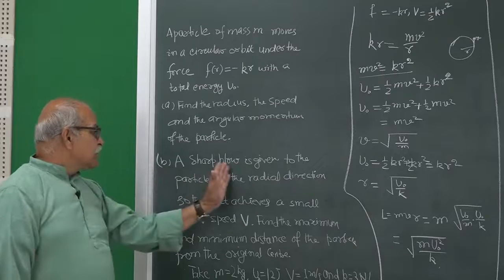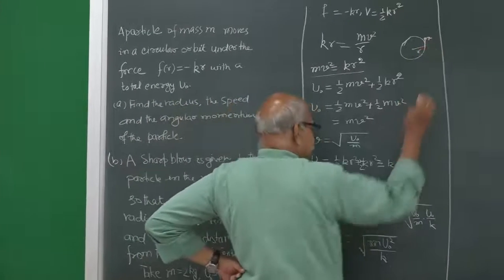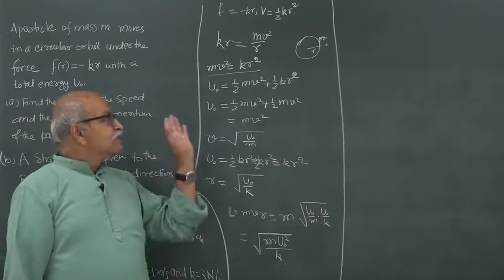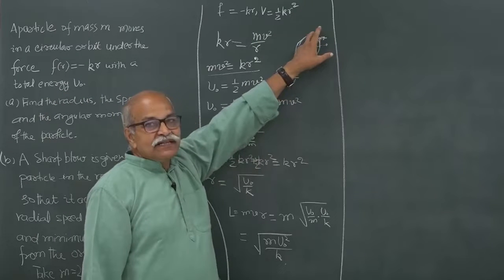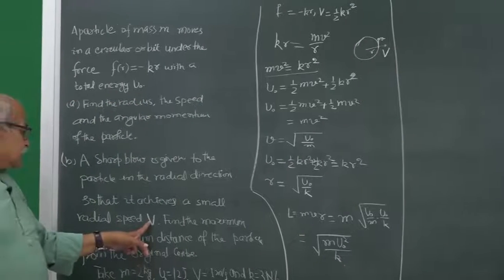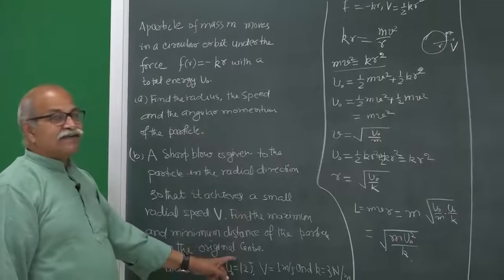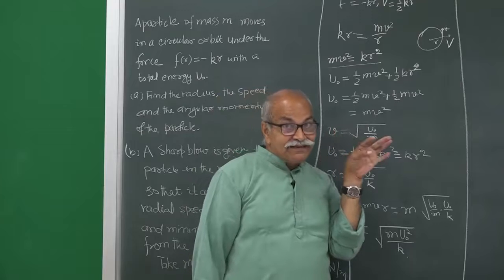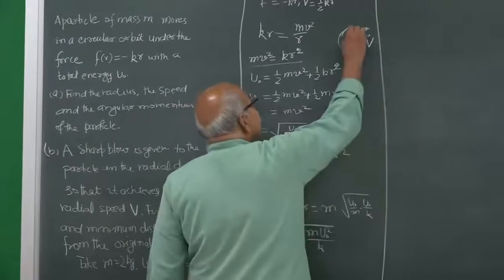Now a sharp blow is given to the particle in the radial direction so that it achieves a small radial speed capital V. The particle was going with tangential speed v_naught, and it is given a sharp blow in the radial direction — a force applied for a short time. This creates a velocity in the radial direction while the tangential velocity remains the same. We must find the maximum and minimum distance of the particle from the original center.